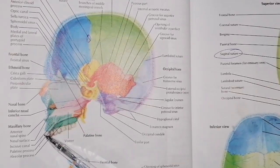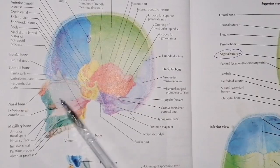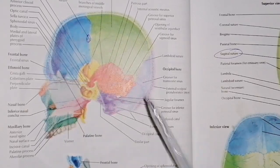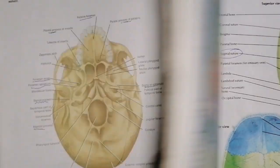We will remove the mandible from here and take a transverse section so that we can clearly identify each bone.